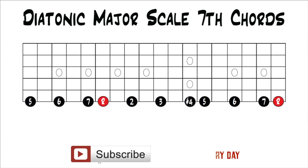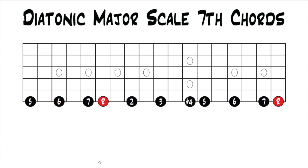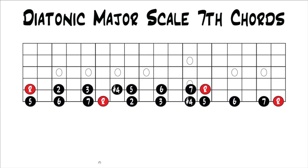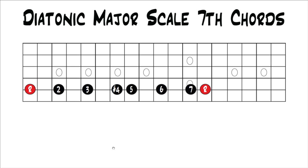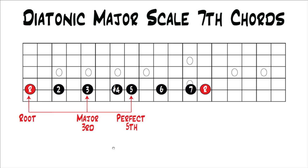Rearranging intervals again so that the 4th note is our new root. We end up with root, 2, 3, sharp 4, 5, 6, 7. I'm just moving it to the next string to give us more room to move up the fretboard — we're just moving to unison notes, so it's the exact same thing. Building a triad off the 4th note of a major scale gives you a major triad. If we stack another 3rd onto that to get to our 7th, we end up adding the major 7th. That gives us root, major 3rd, perfect 5th, major 7th — a major 7th chord. Building a 7th chord off the 4th note of the major scale gives you another major 7th chord.